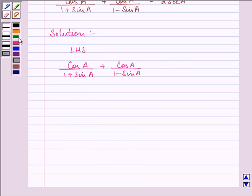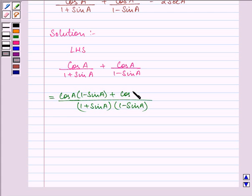Now taking the LCM, we have 1 plus sin A into 1 minus sin A. In the numerator we will be having cos A into 1 minus sin A plus cos A into 1 plus sin A.